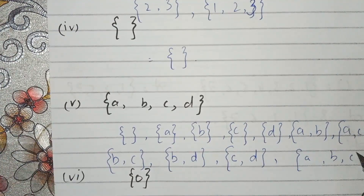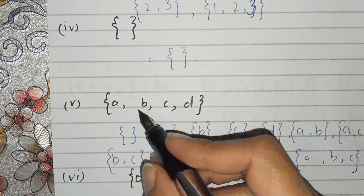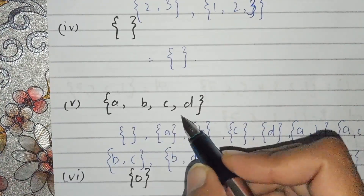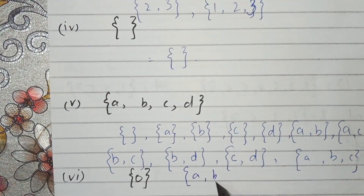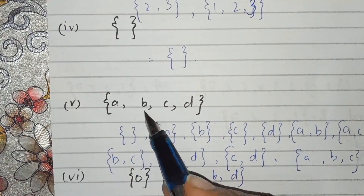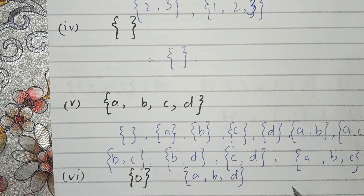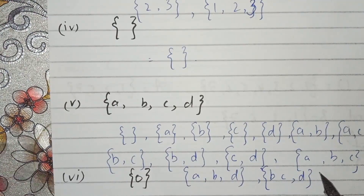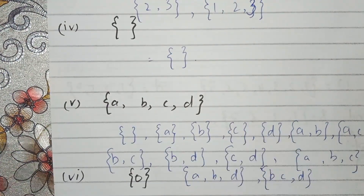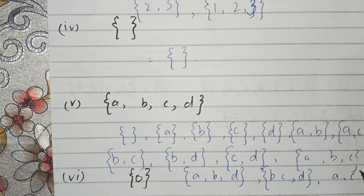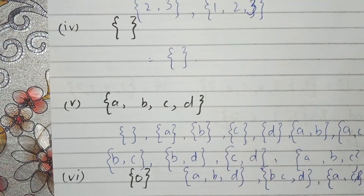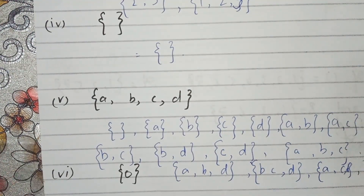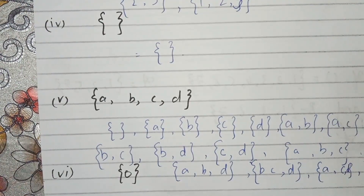Now we combine three members: {a,b,c}, {a,b,d}, {a,b,d}, {b,c,d}, {b,c,d}, {a,c,d}, {a,c,d}, {b,c,d}.